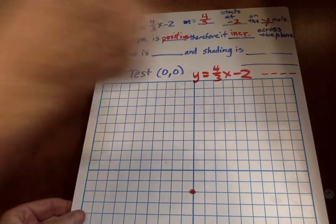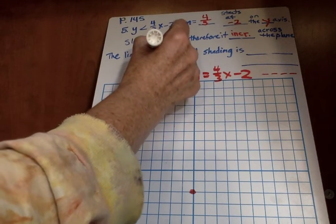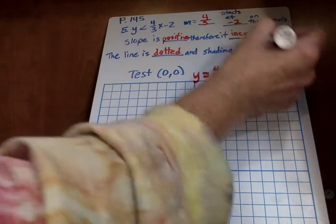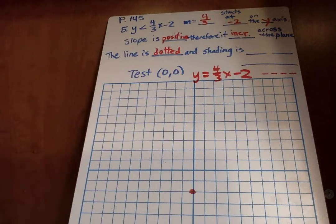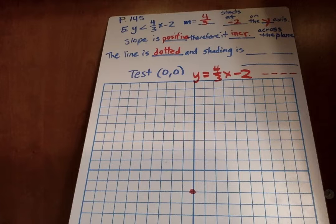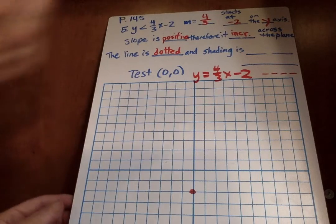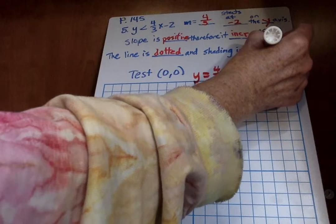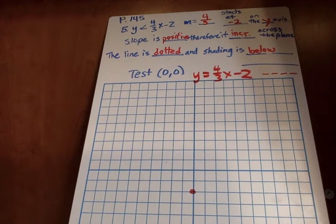Slope is positive. Therefore, it does what? It increases. So it's going up and to the right. I'll put increases across the plane. The line is dotted and it's less than. So what is it going to be? It is going to be below or to the left of the line. Well, I don't know if it's to the left or right, but it is going to be below. Shading is below to the left of the line. Let's go ahead and graph this one because I think it's good practice.